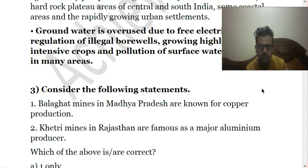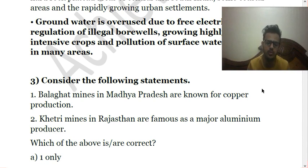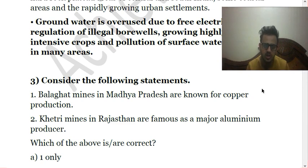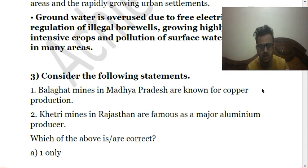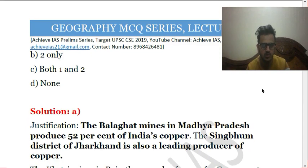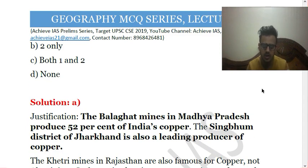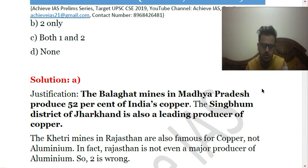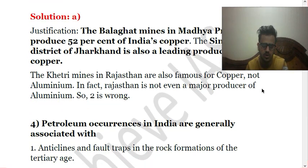The third question considers the following statements: one, Balaghat mines in Madhya Pradesh are known for copper production; two, Khetri mines in Rajasthan are famous as a major aluminum producer. The second statement is clearly wrong — Khetri mines in Rajasthan are famous for copper, not aluminum. Only the first statement is correct, because Balaghat mines are indeed an important source of copper production. There is also a Singhbhum plateau in Jharkhand where copper is found. So the answer is A — one only. Balaghat mines in Madhya Pradesh account for 52% of India's copper production.